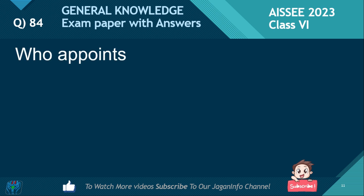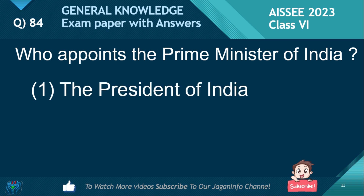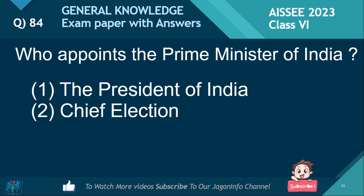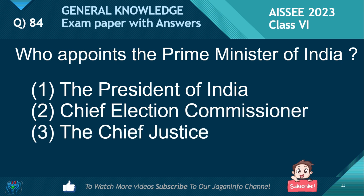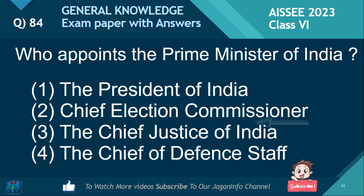Who appoints the Prime Minister of India? Options: The President of India, The Chief Election Commissioner, The Chief Justice of India, The Chief of Defence Staff. If you know the answer, please put the comment below. The right answer is the President of India.